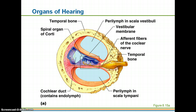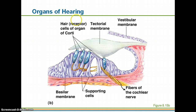Looking at the organ of Corti, here you have the tectorial membrane and your receptor cells — zooming in, you'll actually see the hairs that get bent. The tectorial membrane is shown here, and as vibrations are transferred through the fluid in the cochlea, they cause the tectorial membrane to move, therefore bending the hair cells.